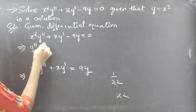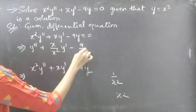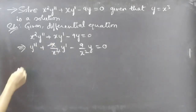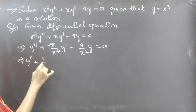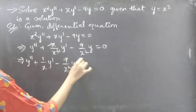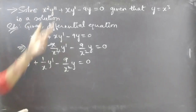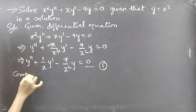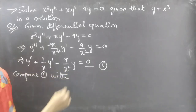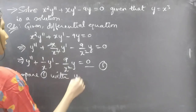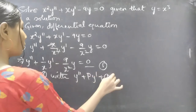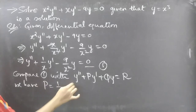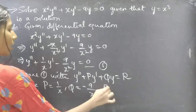We get y'' + (1/x) y' − (9/x²) y = 0. One x gets cancelled from the second term, giving y'' + (1/x) y' − (9/x²) y = 0. Consider this as equation 1. Now compare equation 1 with the standard form y'' + Py' + Qy = R. We get P = 1/x, Q = −9/x², and R = 0.